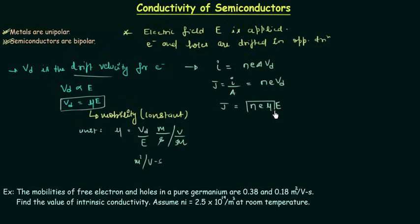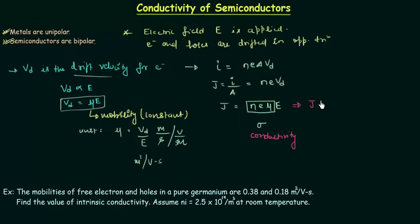This product N times e times Mu on the right-hand side is represented as sigma, where sigma is conductivity — a property of the material. So we can write J equals sigma times E, and this is nothing but Ohm's law.